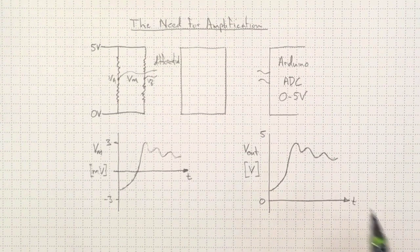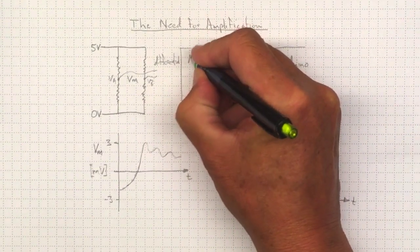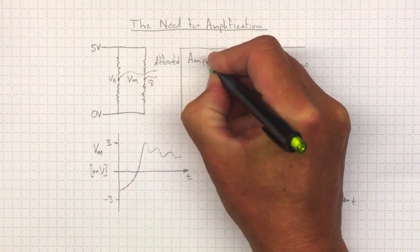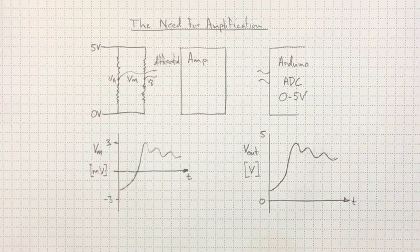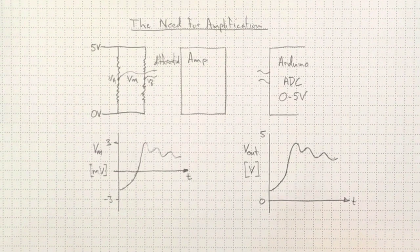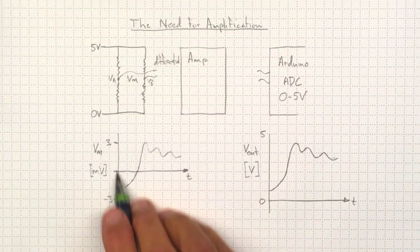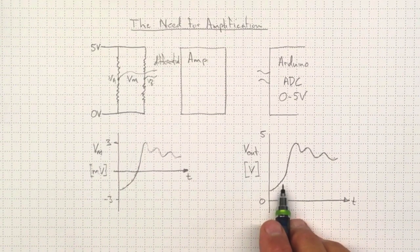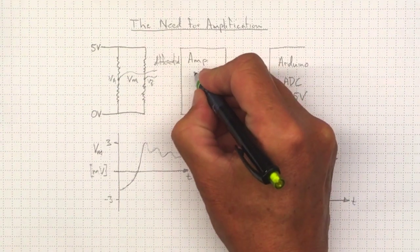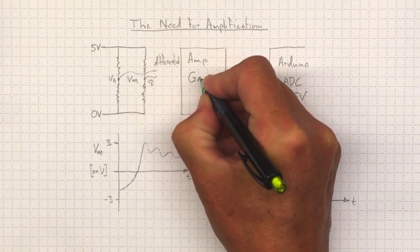Now to do that, we'll use a black box. We'll call it an amplifier. And that amplifier has to do two things for us. It has to increase the signal to make it bigger in magnitude instead of being millivolt size to make it volt size. And that's referred to as the gain of the amplifier. That's a multiplier by which it increases the voltage.